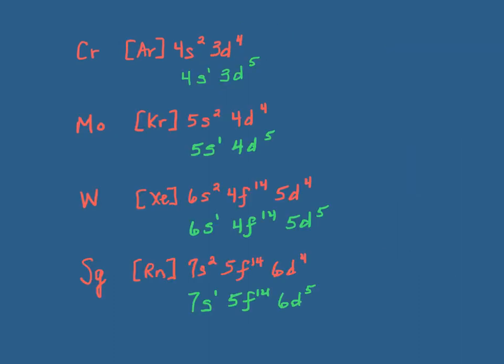So in that group, chromium, molybdenum, tungsten, and seaborgium, instead of 4s2 3d4, it's 4s1 3d5. Instead of 5s2 4d4, it's 5s1 4d5. Same thing with tungsten, although there's those little F orbitals in there to annoy us. And same thing with seaborgium.